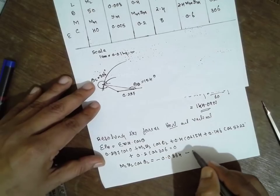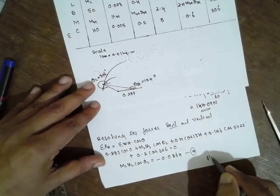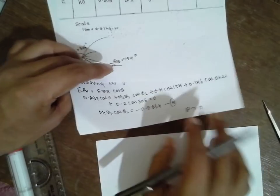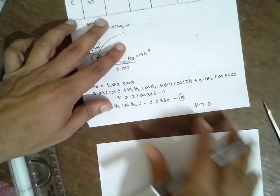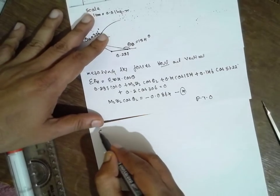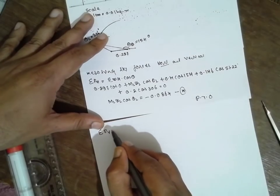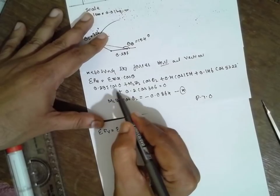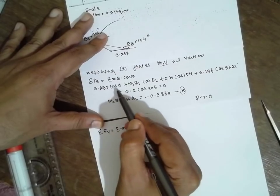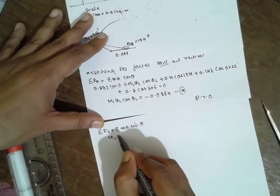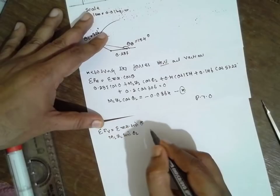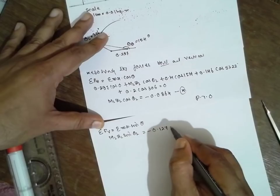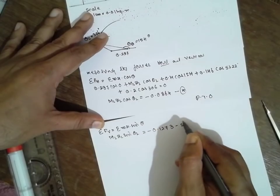To go for further simplification, the forces vertically: M R sin theta. Instead of cos, just replace with sin term. We will obtain ML RL sin theta L value will be minus 0.1273, equation 5.